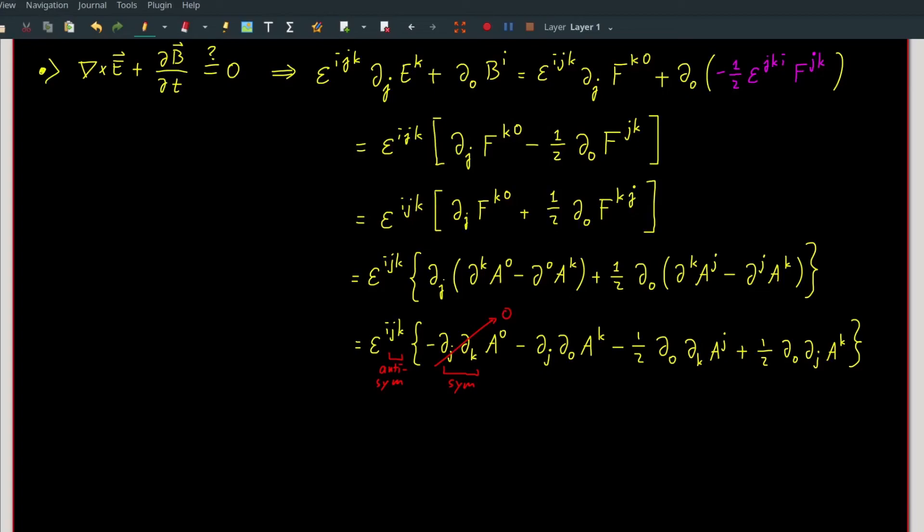The first term here vanishes because of the contractions between two symmetric and anti-symmetric indices. Now, notice that the remaining terms all have similar indices, except for the second to last term that has j and k indices in the different positions from the other terms.